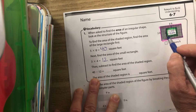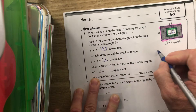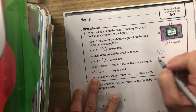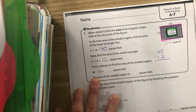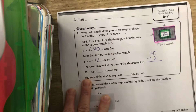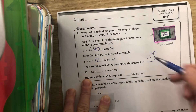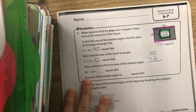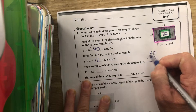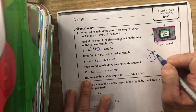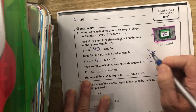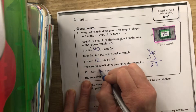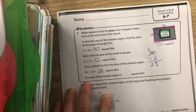It should be 12 — 3 times 4 equals 12. So if the whole rectangle is 40 and this unshaded spot is 12, we do 40 minus 12 to find the shaded area. Pause the video and calculate that. Remember: more on the floor, go next door and get 10 more. So 10 minus 2 is 8, and 3 minus 1 is 2, giving us 28 square feet.